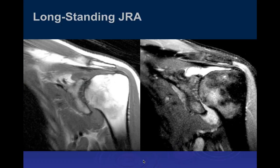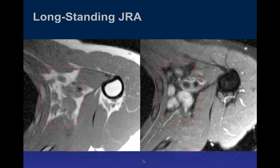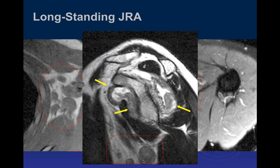Juvenile rheumatoid arthritis often affects only one joint with fever, swelling, effusion, and synovitis, whereas rheumatoid arthritis in adults almost never affects a single joint. This raises the question of whether JRA and adult RA are truly two different diseases. JRA tends to burn out, while adult RA comes and goes repeatedly.